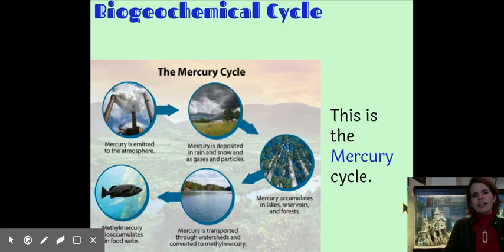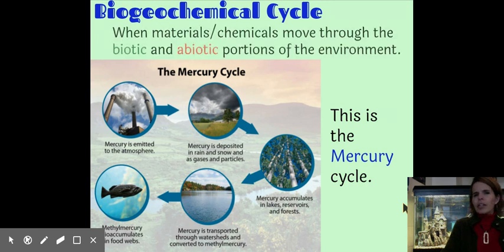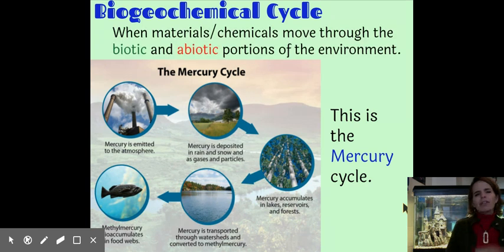All right, so what are we talking about with this recycling business? We're talking specifically about something called biogeochemical cycles. Bio means life, geo means earth. So we're talking about chemicals that are traveling through the biotic and abiotic parts of the planet. There are many different kinds of biogeochemical cycles. I'm going to tell you about four of them today. The diagram below is not one of the ones I will be testing you on. I just wanted you to see that there is such a thing as a mercury cycle.